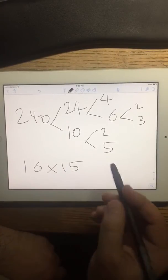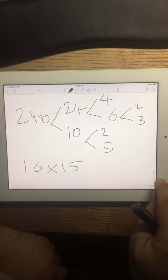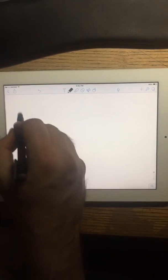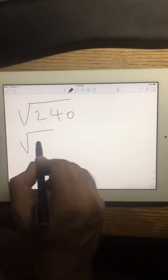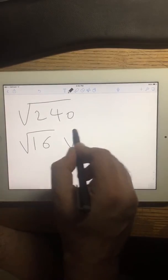So now the square root of 240 equals radical 16 times radical 15,